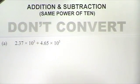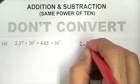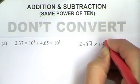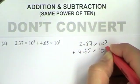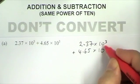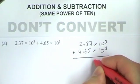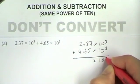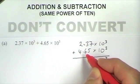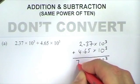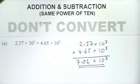I'm going to write them one under the other: 2.37 times 10 to the 3 plus 4.65 times 10 to the 3. The powers of 10 are the same, so I'm going to add them together and whatever I get is going to be times 10 to the 3. So this is 2.37 plus 4.65, which comes to 7.02 times 10 to the 3.